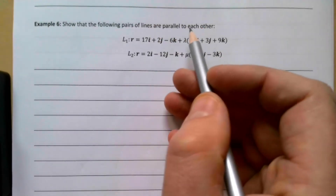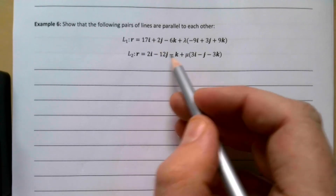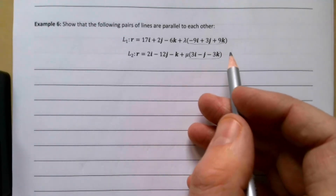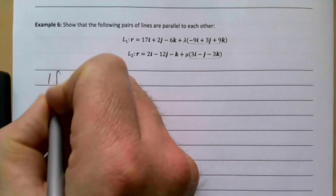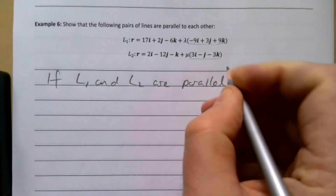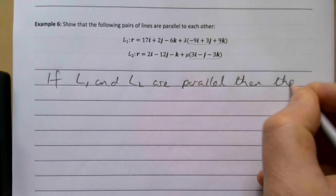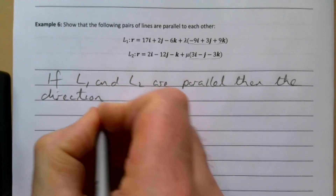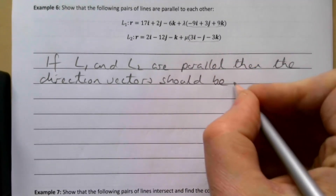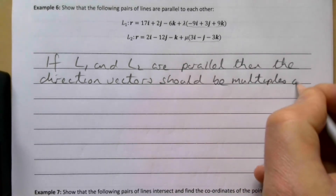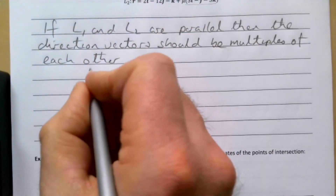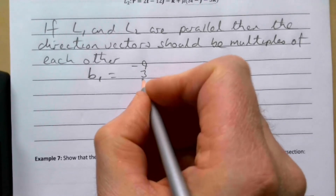Example 6: show that the following pairs of lines are parallel. The 'a' part has no consequence here — these are just different points on each line. If two lines are parallel, the direction vector (b) of one must be a scalar multiple of the direction vector of the other. So if L1 and L2 are parallel, then the direction vectors should satisfy that relationship.